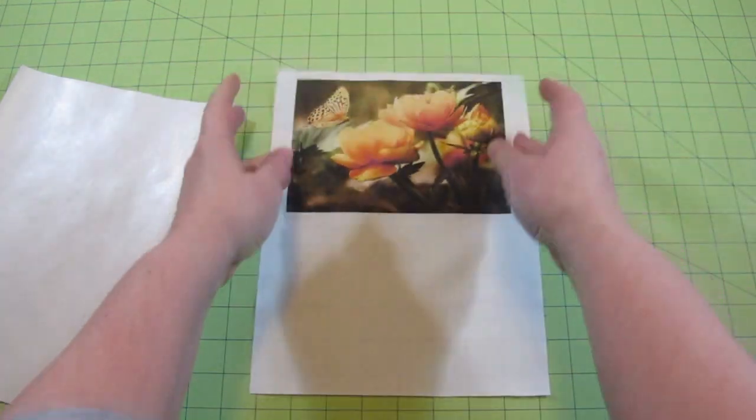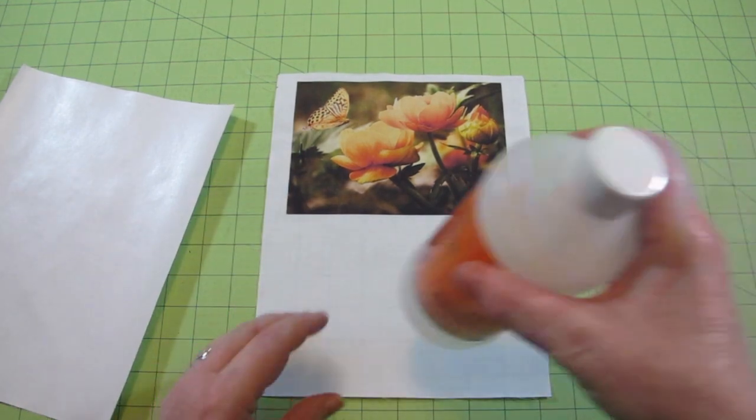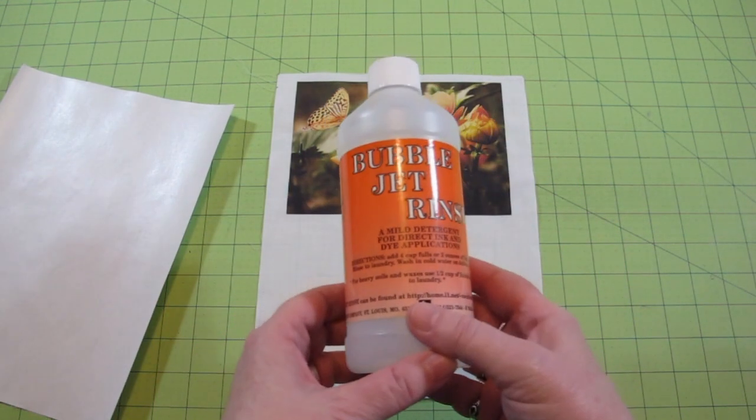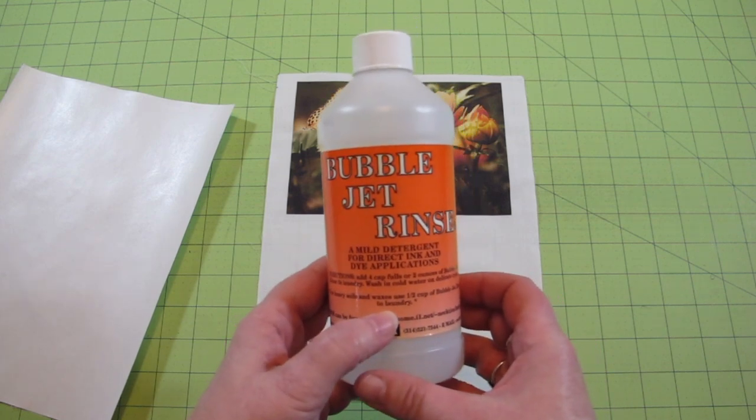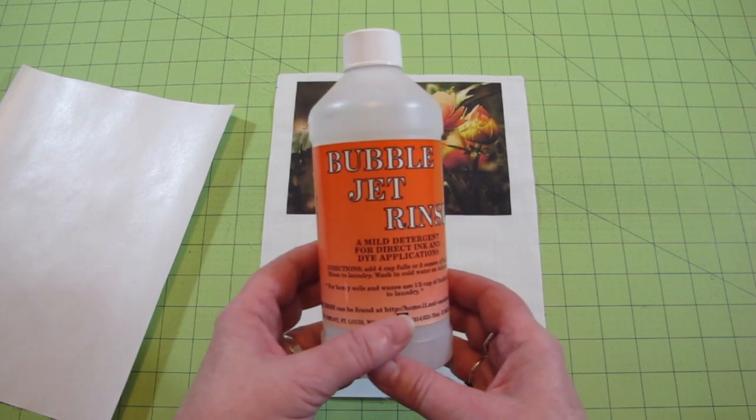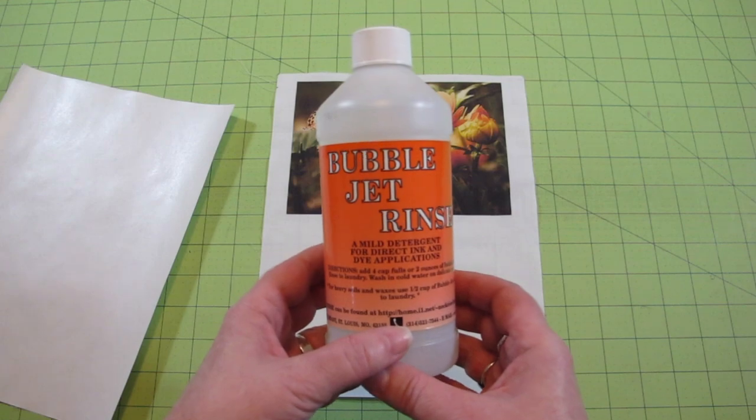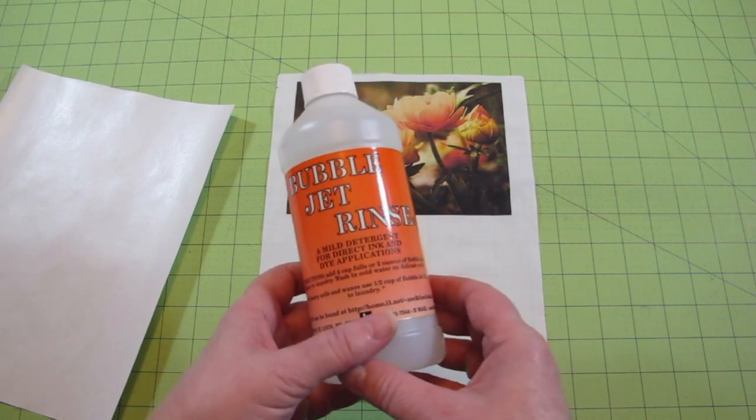If you've prepared your fabric sheet using bubble jet set, it's important to rinse using bubble jet rinse, which is a mild detergent, because this is the final step that creates the chemical bond between ink and fabric, which will make your prints permanent and washable.